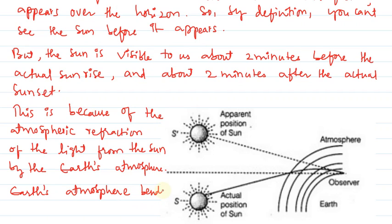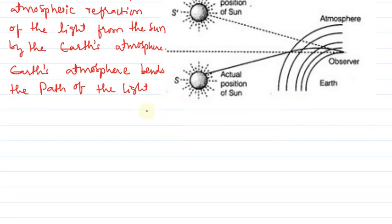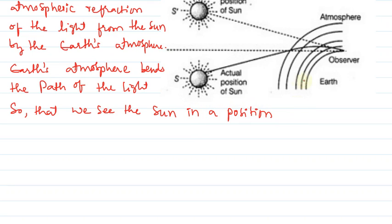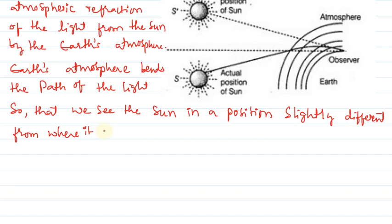Atmospheric refraction bends the path of the light, so that we see the sun in a position slightly different from where it really is.